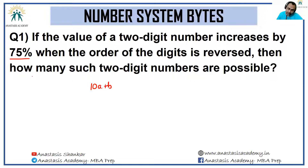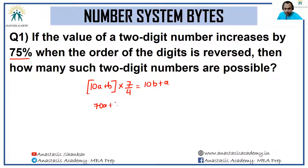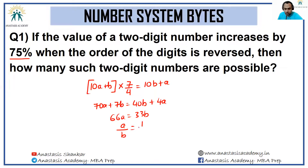The value is increasing by 75 percent — it was itself 100 percent and is increasing by 75 percent — so the value is getting multiplied by 7/4 when the digits are reversed. This expression gives us 70a + 7b = 40b + 4a, or 66a = 33b.